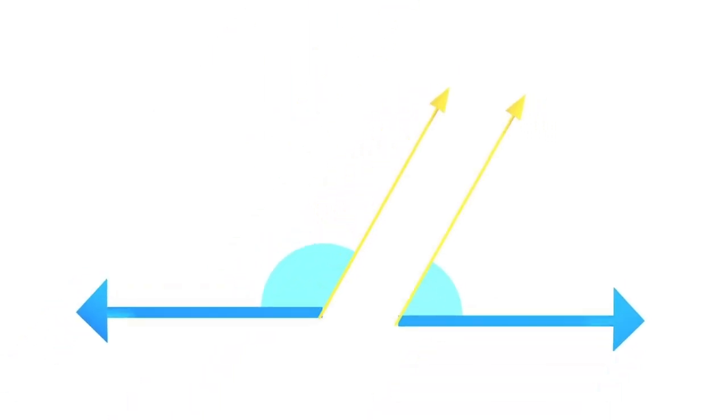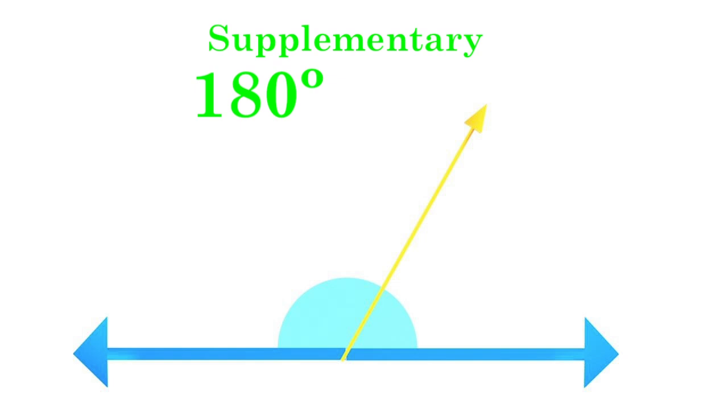When two angles combine to create a 180 degree angle, then they are called supplementary angles. In this case, you can also find one angle by knowing the other.